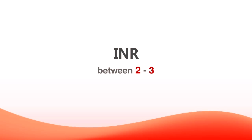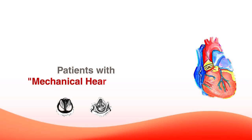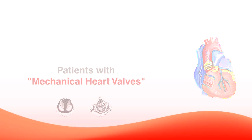Once in a while, the goal INR is between 2.5 and 3.5. For example, people that have mechanical heart valves have a slightly higher goal INR because their blood needs to be a little bit thinner. So that's basically a short tutorial about warfarin, INR, and how it's calculated.